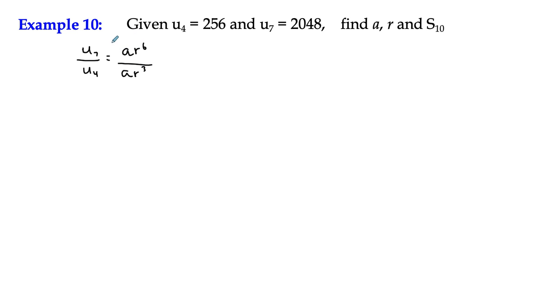If we simplify this fraction, the a terms have a common factor, and r to the 6 divided by r to the 3 means we can simplify that to get r cubed. In other words, if I divide U7, which is 2048, by U4, which is 256, that actually represents r cubed, not r.